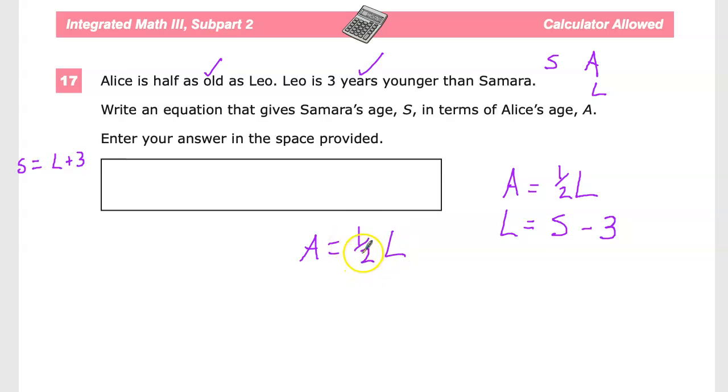So, we need to take that A equals one-half L and move that around a little bit. So, what do I do to get rid of times one-half? Well, I mean, you could divide by one-half, or you could remember that a quick way to get rid of one-half is just to multiply everything by two.